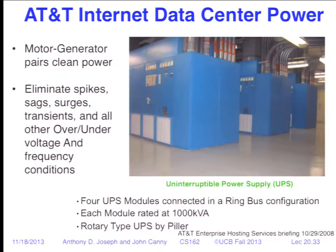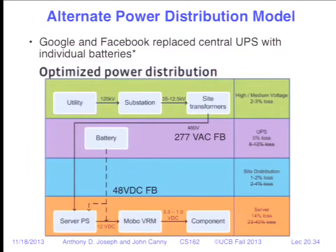Companies like Google and Facebook are looking at alternate approaches: not having generators — if a data center goes down, shift the workload somewhere else — and distributing smaller batteries per rack rather than large central UPSs. They distribute power within the data center at 277 volts, step it down locally, reducing site losses from a central UPS and distribution losses. Converting to 48 volts centrally and sending 48 volts to each component further reduces losses. There's a lot of innovation happening in this space.